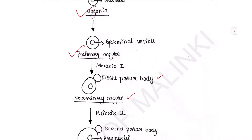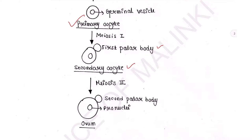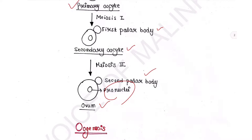The secondary oocyte will undergo meiosis II and then produce ovum and second polar body. The nucleus of the ovum is called pronuclei. So this is the process of oogenesis.